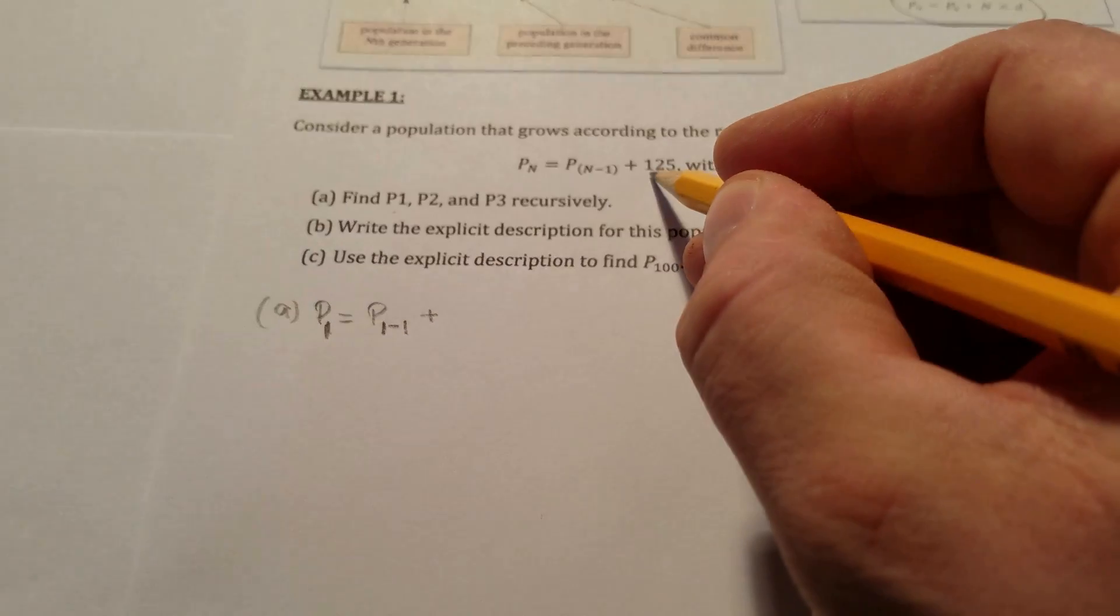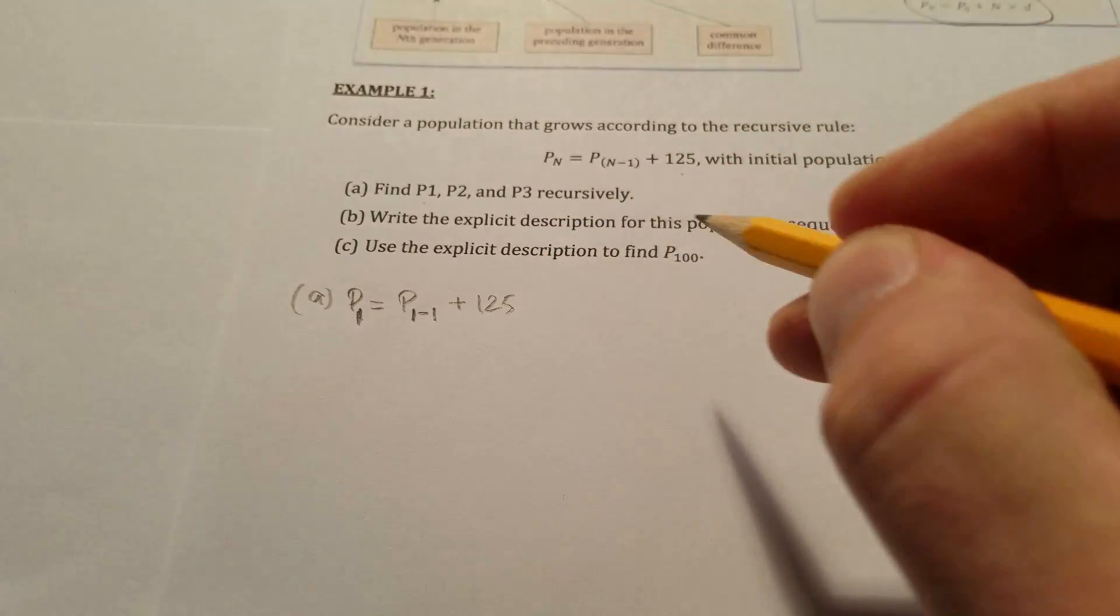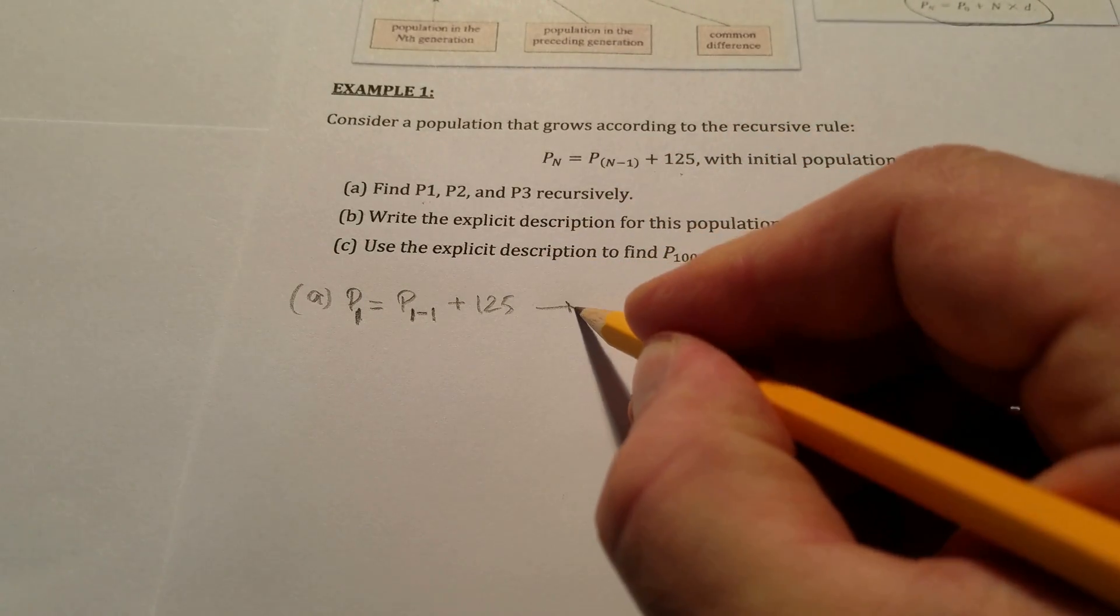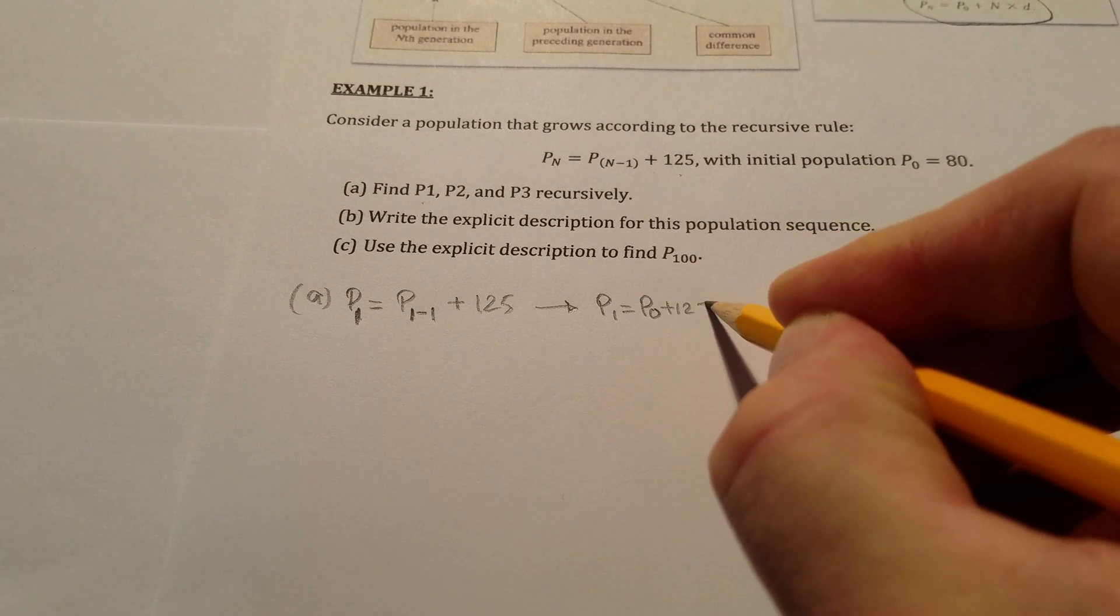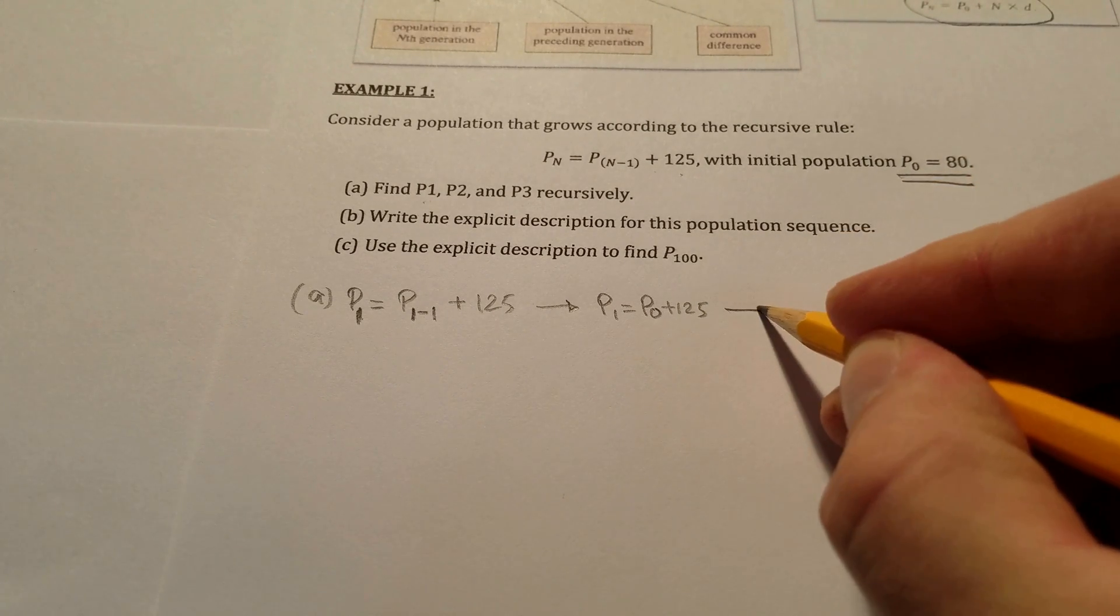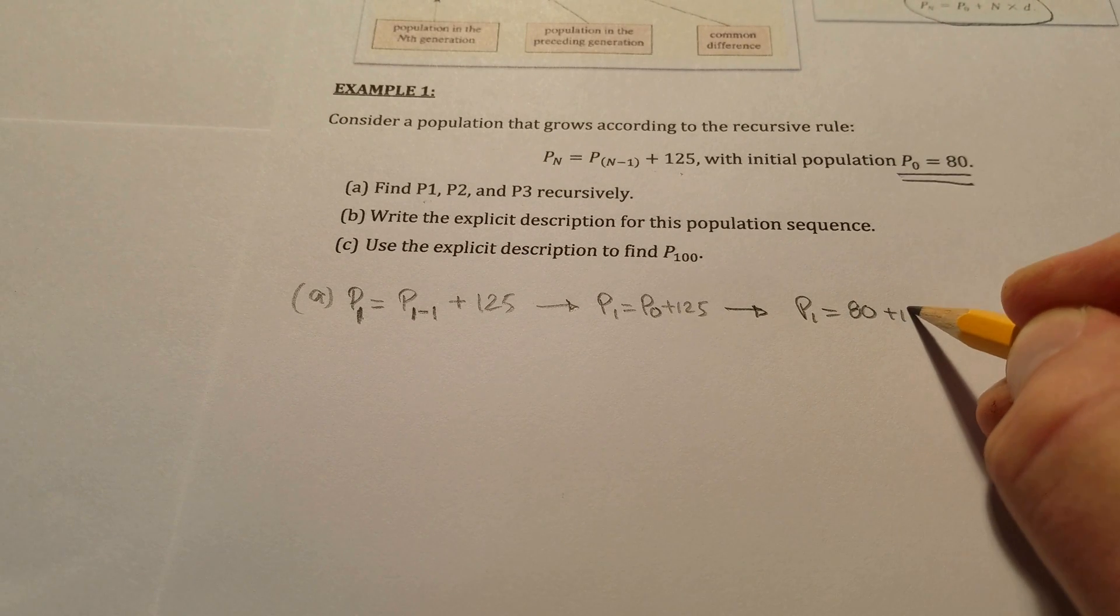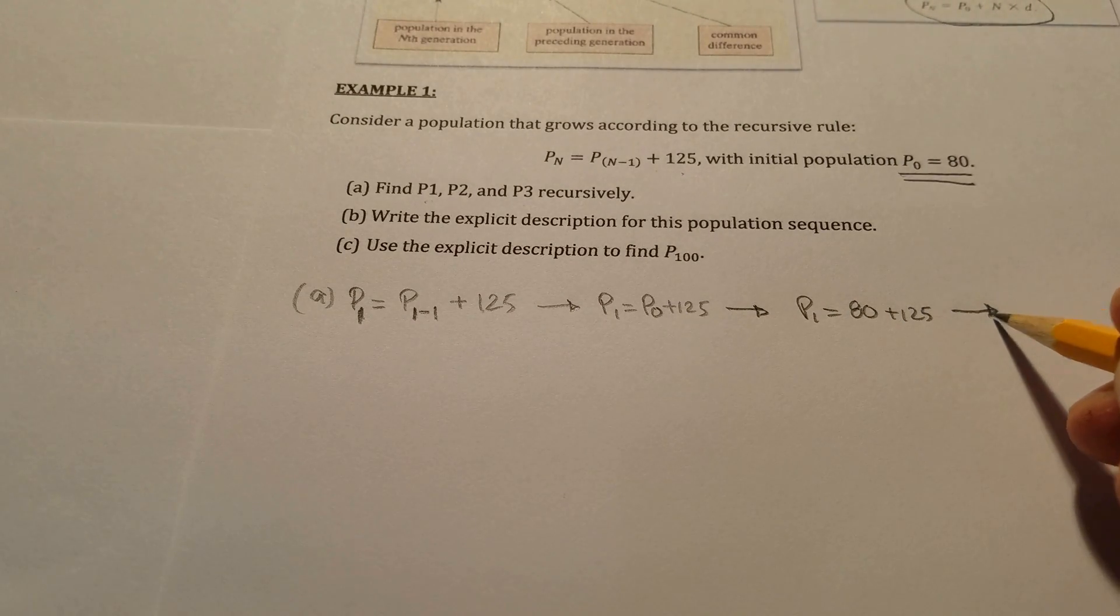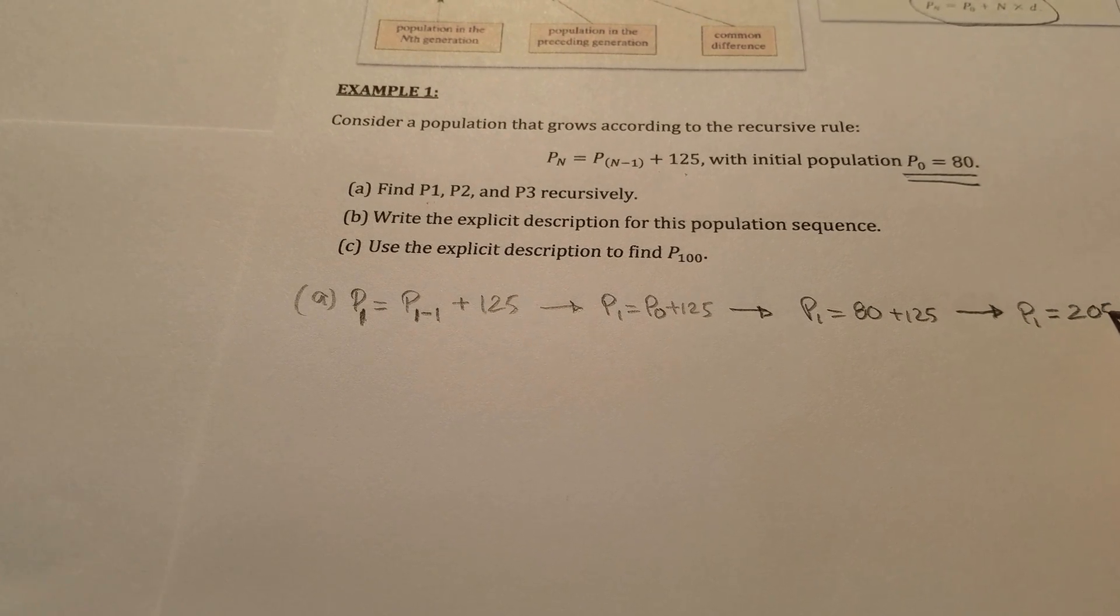We need to add to that the increment of 125, and now we can simplify this. P₁ equals P₀ plus 125. We can reference P₀. So P₁ equals 80 plus 125, which means the population of generation one is 205.